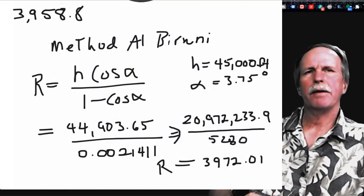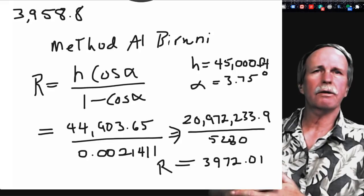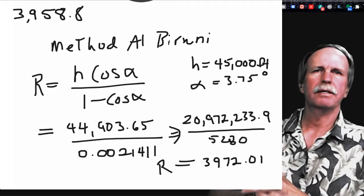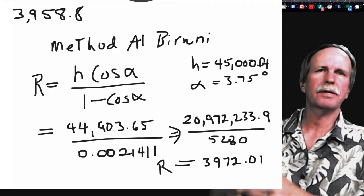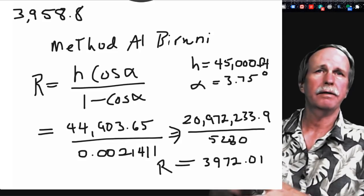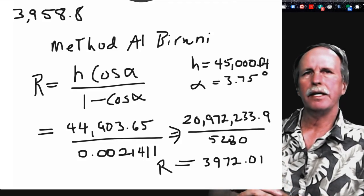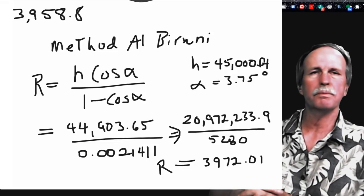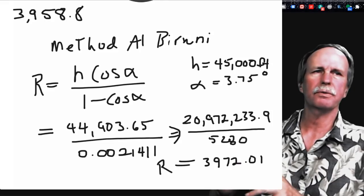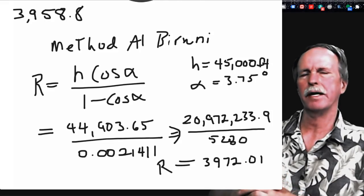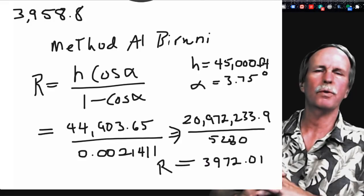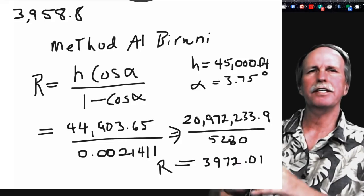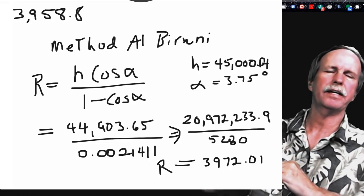Another measurement was taken by Wolfie 6020 flying an aircraft at 45,000 feet, measuring a dip to the horizon of 3.75 degrees, compared to less than one-sixth of a degree for the main surveyor. His accuracy: he came up with a radius of the earth of 3,972 miles. The actual radius of the earth is 3,958 miles, and that's an error of less than 0.3%.